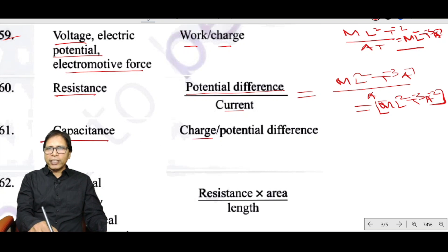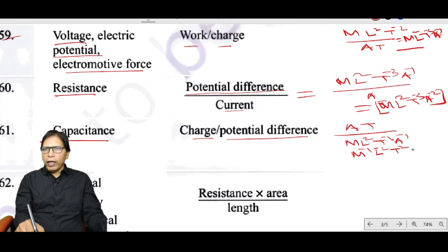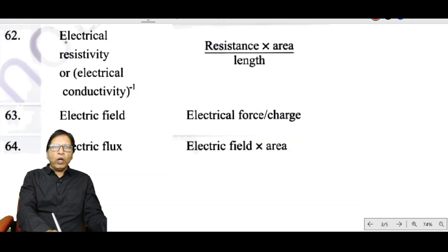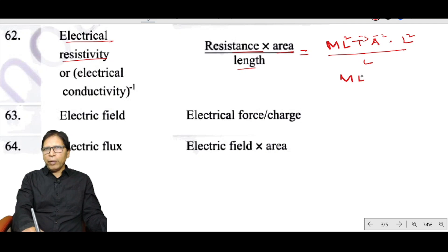Capacitance equals charge divided by potential difference: AT ÷ ML²T⁻³A⁻¹ = M⁻¹L⁻²A²T⁴. Electrical resistivity equals resistance × area divided by length: ML²T⁻³A⁻² × L² ÷ L = ML³T⁻³A⁻².